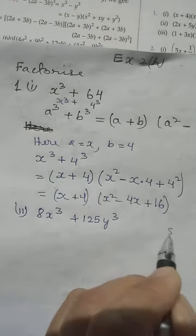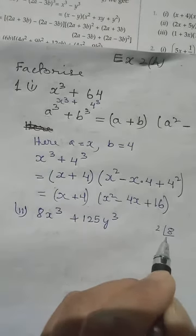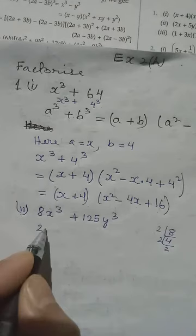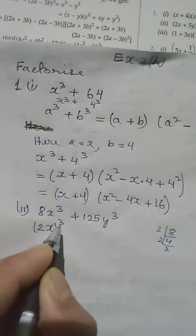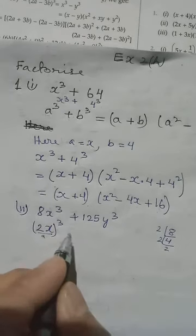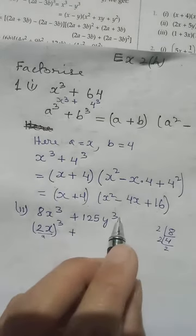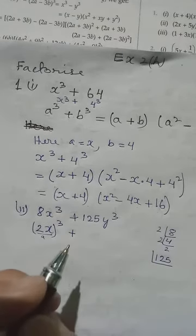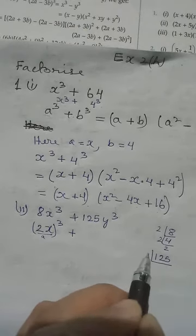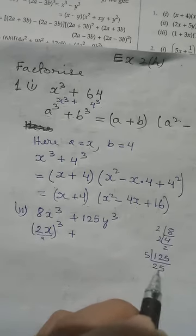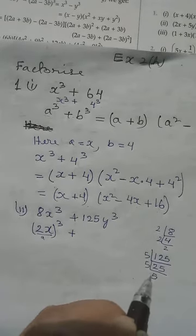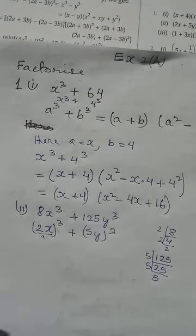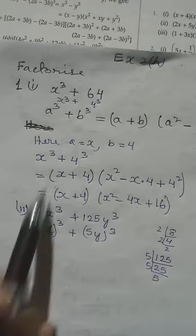For the coefficient 8, can we split it as a power of 3? Using 2 into 2 into 2, we get three 2s, so 8 equals 2 cubed. In place of x we can write 2x whole to the power 3. For 125, ending with 5, we try: 5 times 5 is 25, times 5 is 125 — there are three 5s, so 125 equals 5 cubed. We can apply the formula, with a equal to 2x and b equal to 5y.